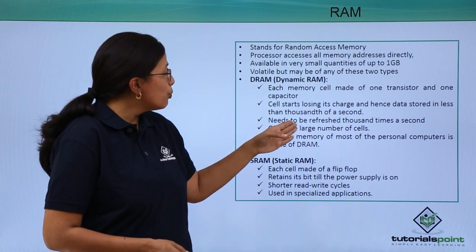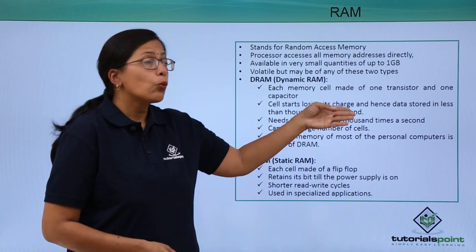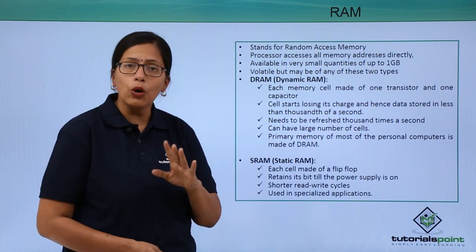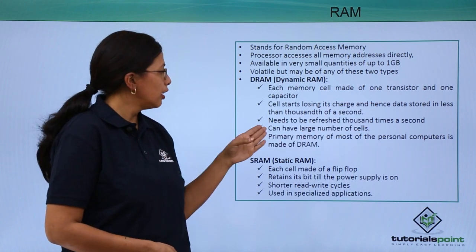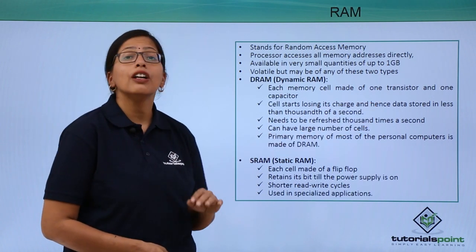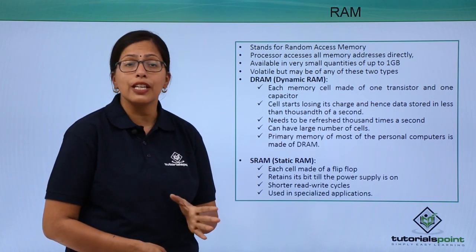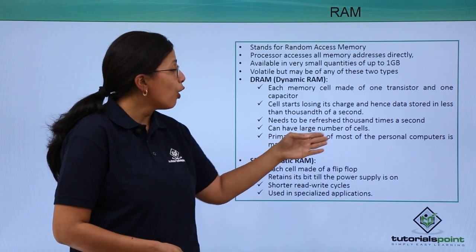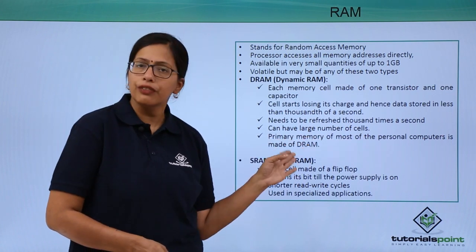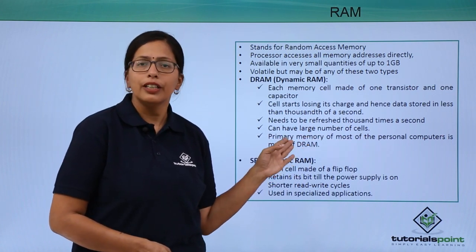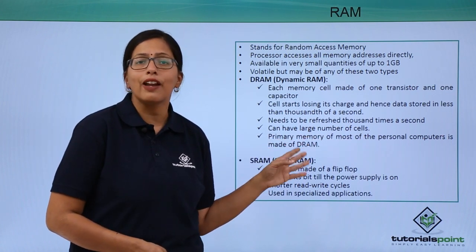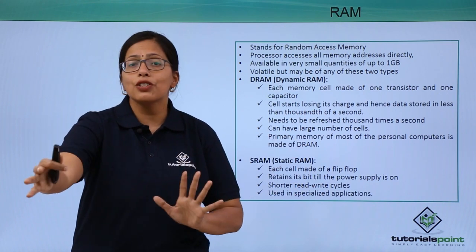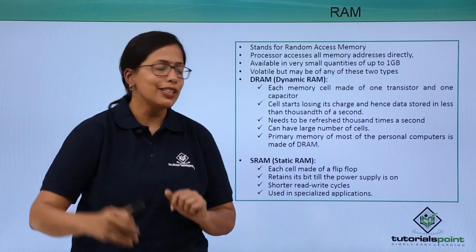It needs to be refreshed 1000 times per second. However, it can have a large number of cells. So primary memory of most PCs is made of DRAM, dynamic RAM, because we can have a large amount of DRAM.